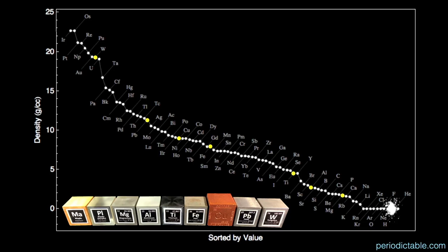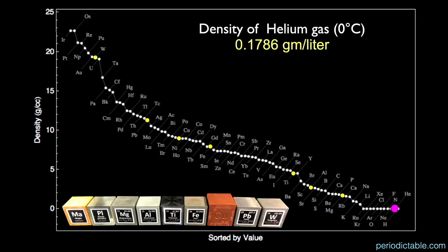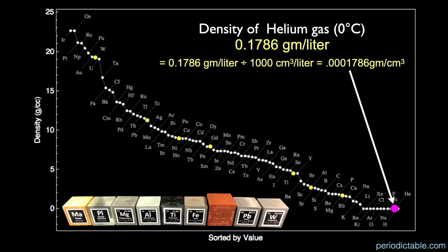Again, helium's density as a gas is 0.1786 grams per liter, or on this chart, 0.0001786 grams per cubic centimeter, the magenta circle, slightly above hydrogen, which is about half as dense.